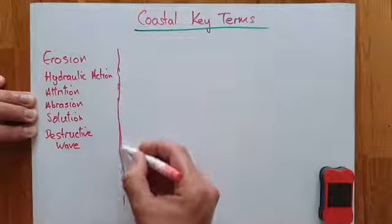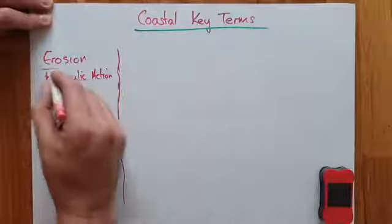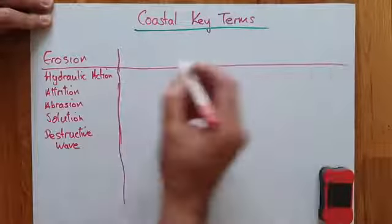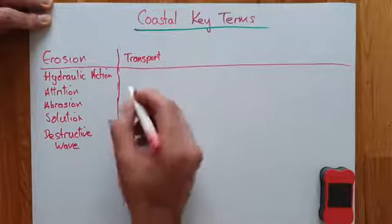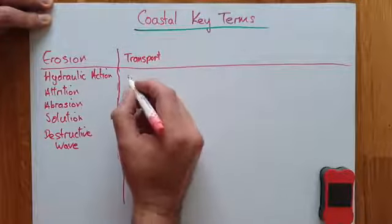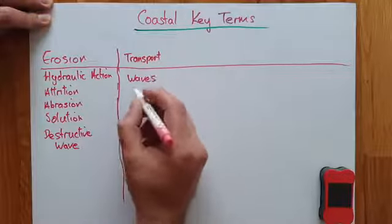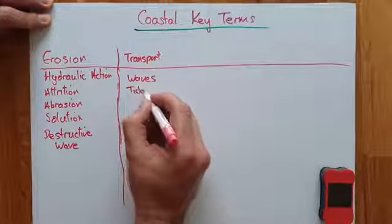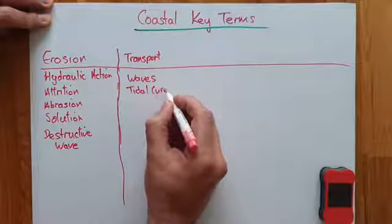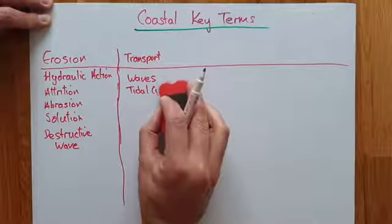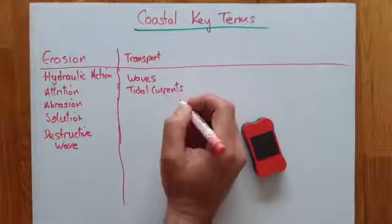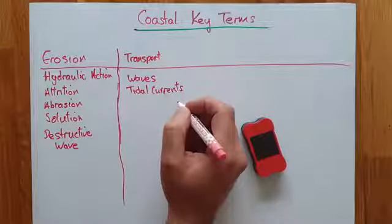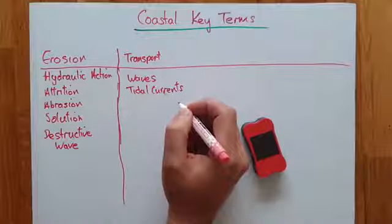The next section is transportation — the movement of the eroded material around the coast. That material is moved by waves and also by tidal currents. It's worth mentioning that when we look at tidal currents we'll be looking more at tides in a later lesson.